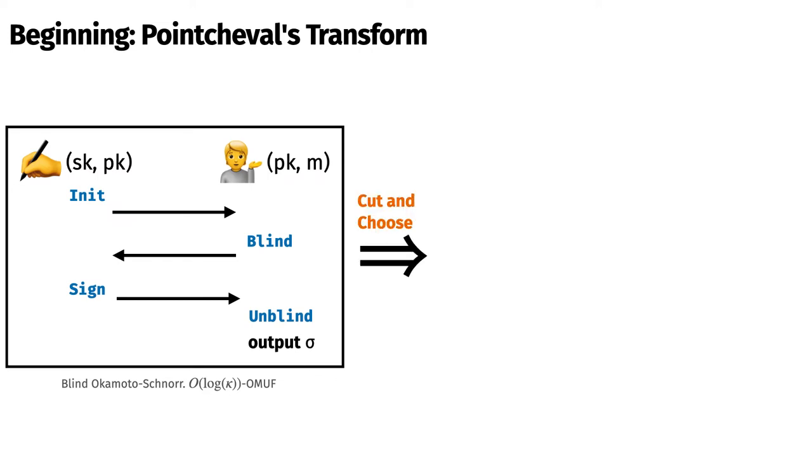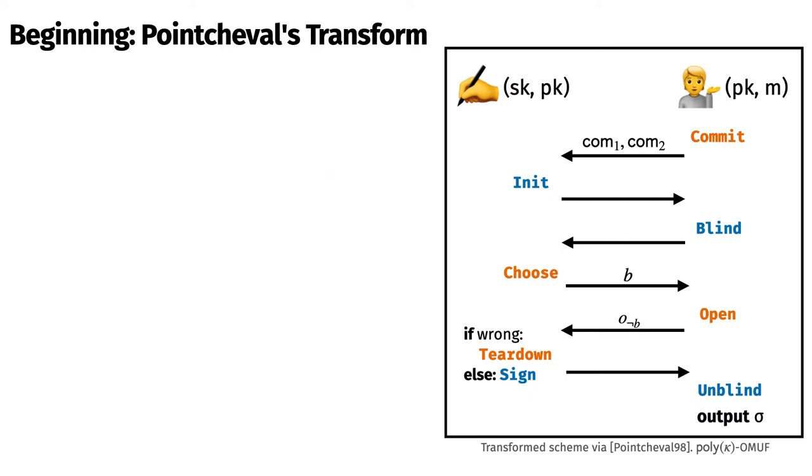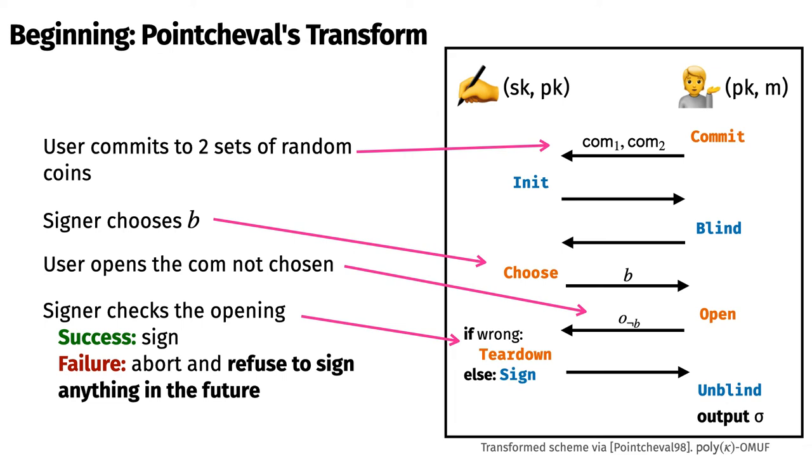Poincheval turns this into a six-round protocol by introducing a cut-and-choose sub-protocol. Let's examine this in detail. The transform changes the underlying scheme as follows. First, the user now commits to two sets of random coins. This is the randomness that's going to be used to blind their message. Next, the signer picks a commitment at random to leave unopened. The other must be opened. Next, the client sends the opening. And finally, the signer checks the opening. If it was valid, it completes the rest of the protocol as in the underlying scheme. If the opening was invalid, then the signer aborts the protocol and then halts forever, refusing to sign any future messages. We call this teardown because it can't be recovered from.